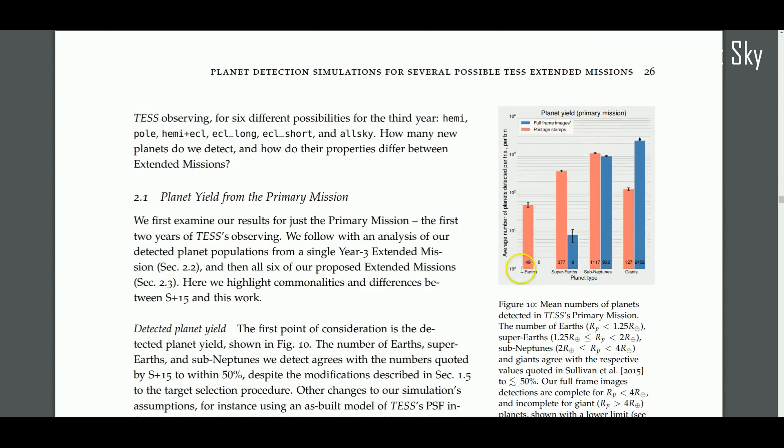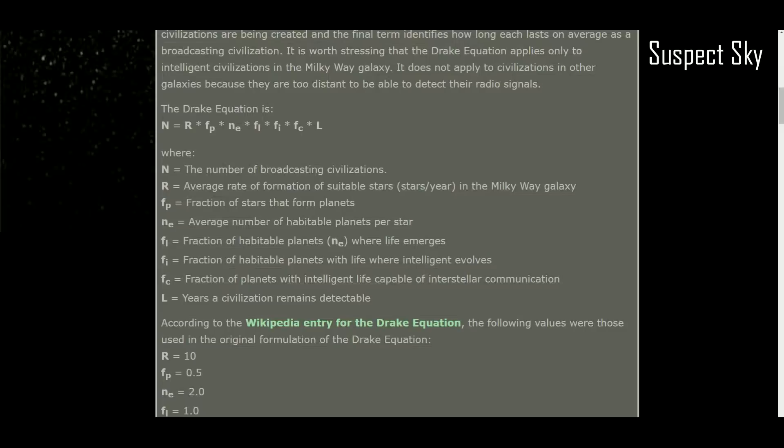You can see here this is a nice graph. It says the average number of planets detected per trial bin for 2400 giant planets. But if you look to the left, you can see that this is multiplied by a little bit over 10 to the third power. If you kind of multiply all these out, you're going to get a rough approximation of how many planets this thing is expected to find, and that is really going to modify this Drake Equation.